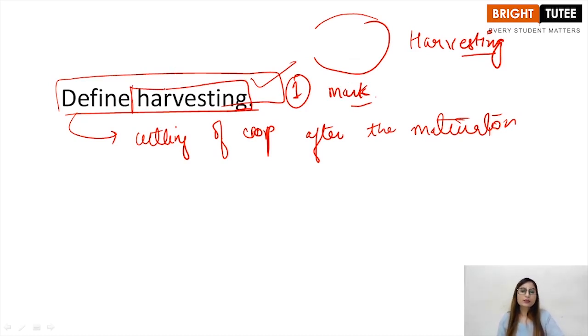If the question is more detailed, that what is harvesting, why is it done, what are the methods of harvesting, then it becomes a three mark question. Then you explain everything in detail.